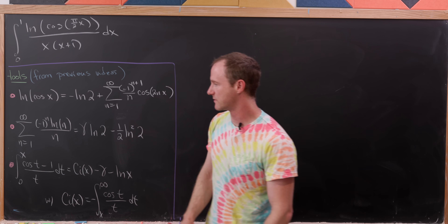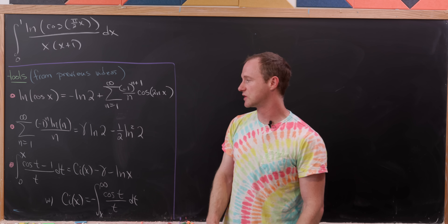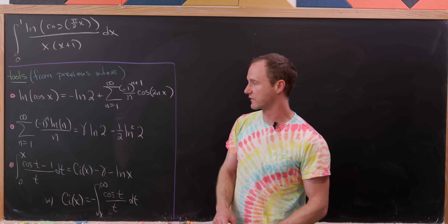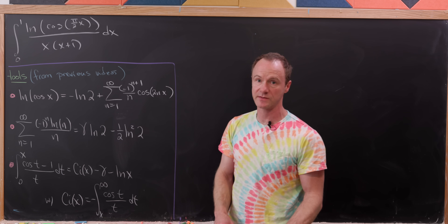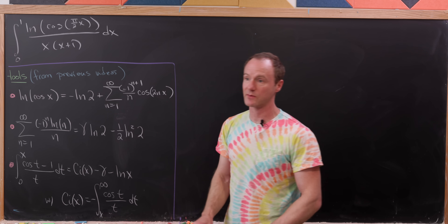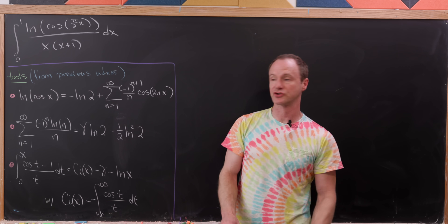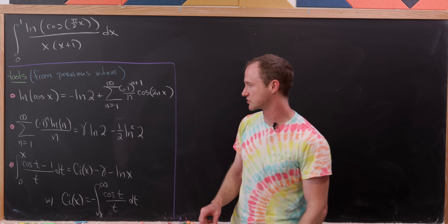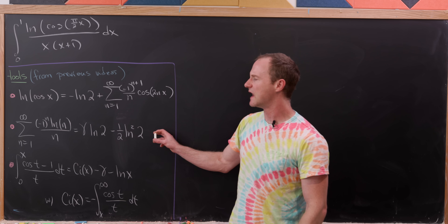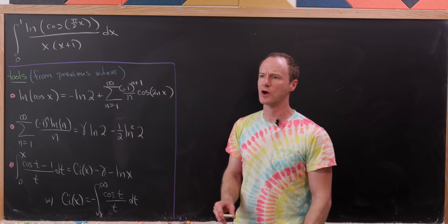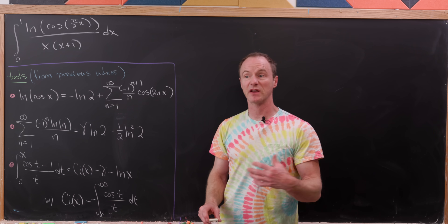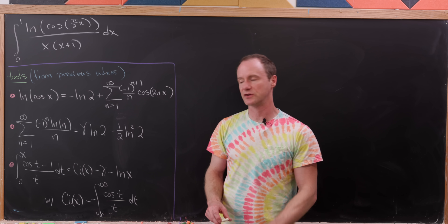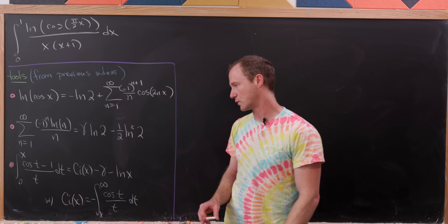Then we'll have the sum as n goes from 1 to infinity of (−1)^n times natural log of n over n, equal to the Euler–Mascheroni constant γ times natural log of 2, minus one-half natural log squared of 2. This comes from the video where we find something related to the Dirichlet eta function.